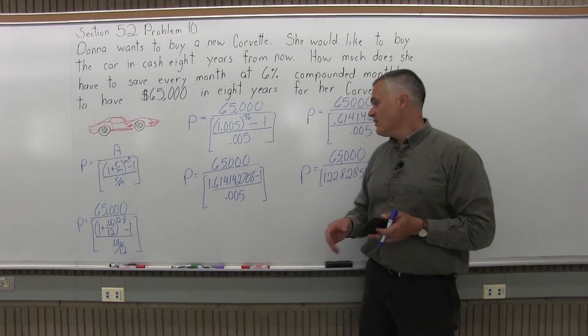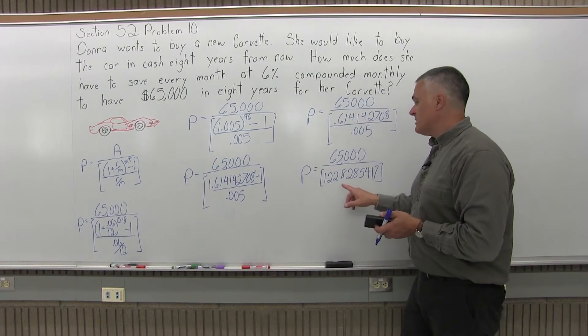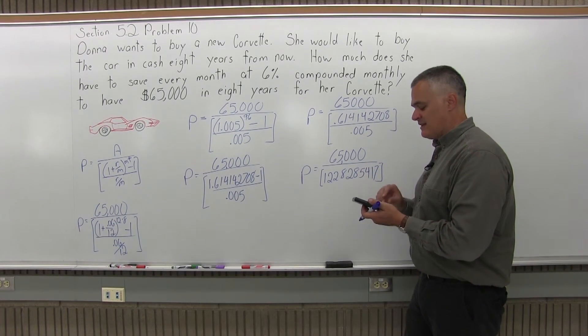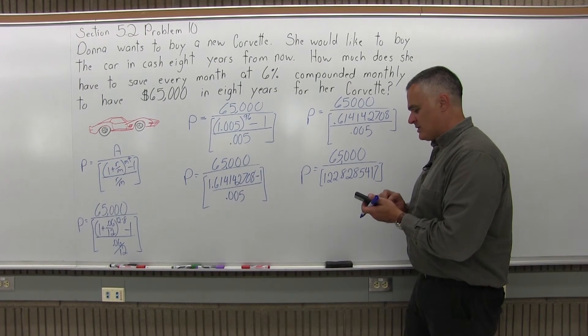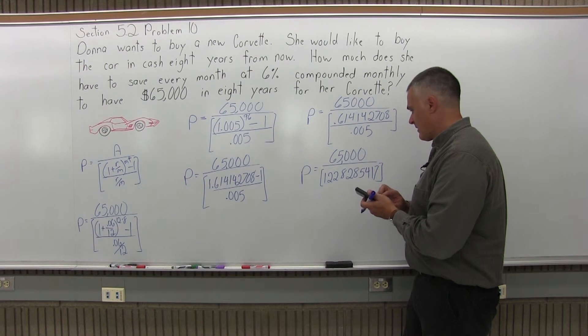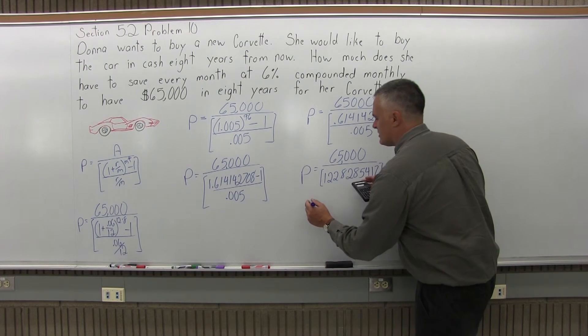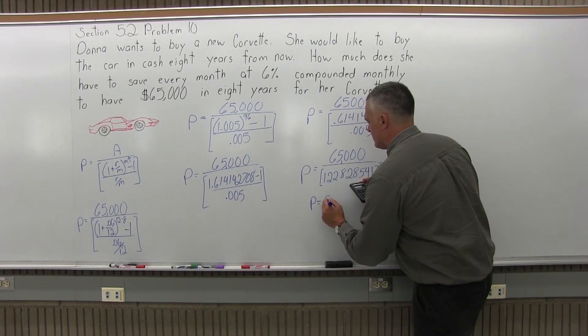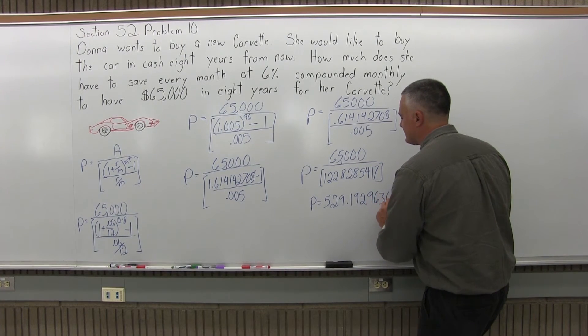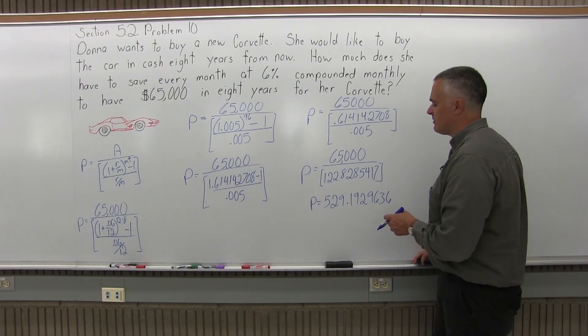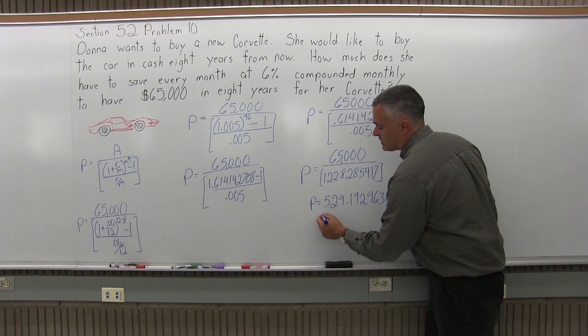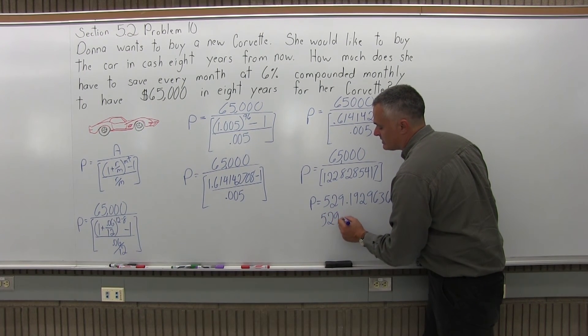Now the final step is to divide 65,000 divided by 122.8285417. And I get as a final answer P equals 529.1929636. Now because that's money I don't want so many places after the decimal. I want to just round it off, so the final answer is $529.19.